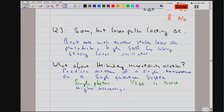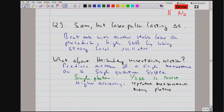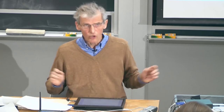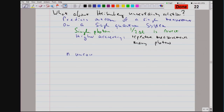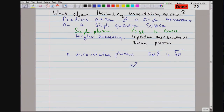You can get higher accuracy by doing repeated measurements or by using many photons. If we have N uncorrelated photons — in other words, we perform N measurements on N different objects — then the signal-to-noise ratio is just by Poisson distribution square root N. Therefore, the resolution for the frequency of the photons is better than the Heisenberg or Fourier limit by one over square root N.